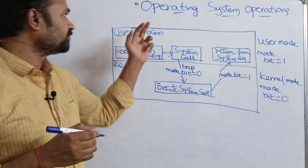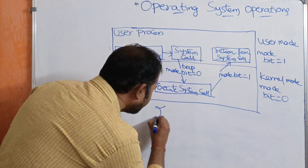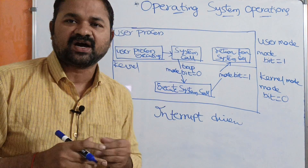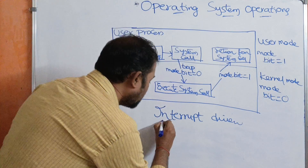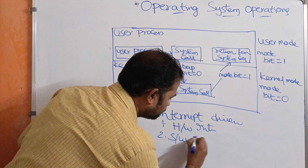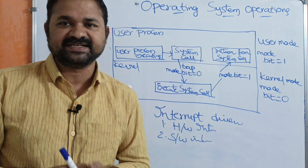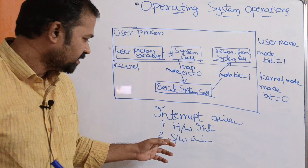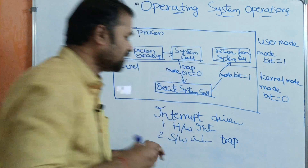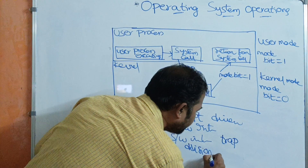Let us discuss operating system operations. The operating system is interrupt-driven. We have two types of interrupts: first, hardware interrupt, and second, software interrupt. Hardware interrupt means the interrupt is generated by hardware devices — it may be an input device or output device. Software interrupt can be called a trap. The best example of a software interrupt is a division by zero exception.